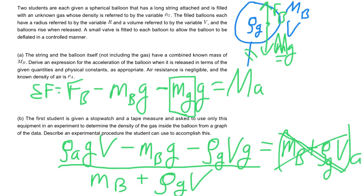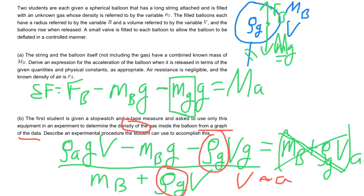The second question asks us to design an experiment to figure out the density of the gas. Looking at our equation, we want to create a lab where volume is one variable and acceleration is another variable, so we can determine the density of the gas from those measurements.